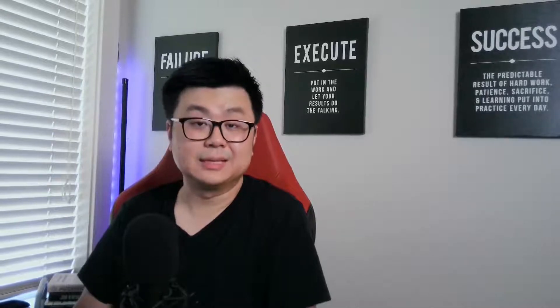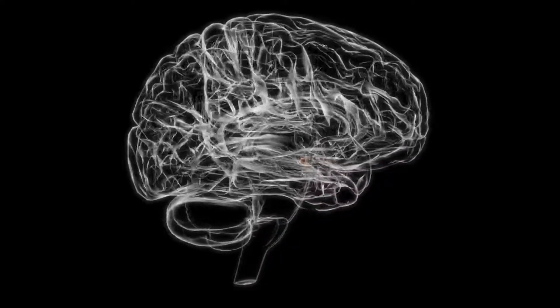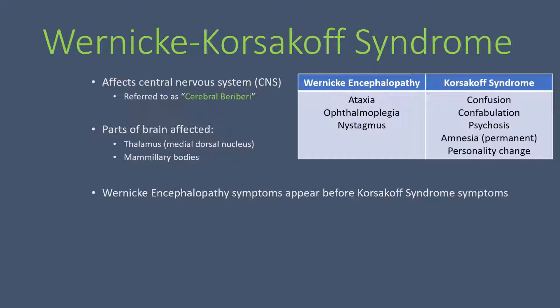Wernicke-Korsakoff syndrome affects the central nervous system — particularly the thalamus and mammillary bodies of the brain — which is why it's sometimes called cerebral beriberi. It is made up of Wernicke's encephalopathy and Korsakoff syndrome, each with different symptoms. Usually the Wernicke's encephalopathy symptoms appear first, and once those subside, the Korsakoff syndrome symptoms appear.